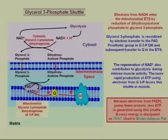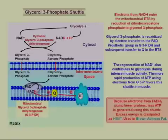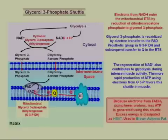The second way to transport reducing equivalents is through the glycerol-3-phosphate shuttle. NADH is produced inside the mitochondrial matrix during the TCA cycle, but in glycolysis NADH is also produced outside the matrix. One of the byproducts of glycolysis, dihydroxyacetone phosphate, can be combined with NADH to produce glycerol-3-phosphate and NAD. Glycerol-3-phosphate can then travel across the membrane.